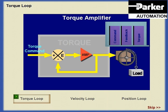Through the use of this feedback control loop, the amplifier output stabilizes at a level that is proportional to the input level. This is known as proportional servo control.